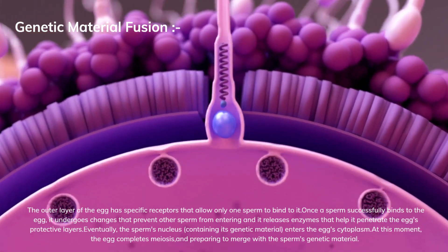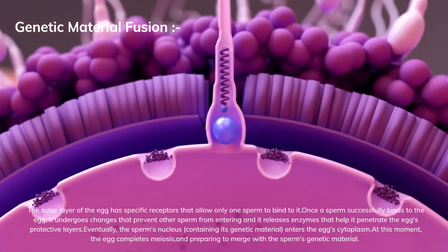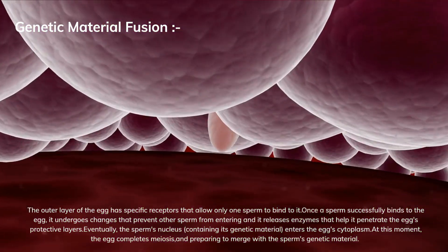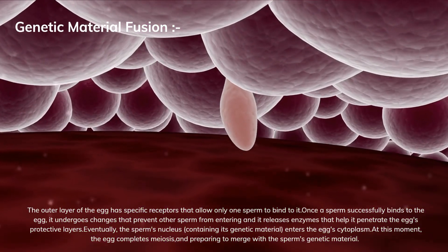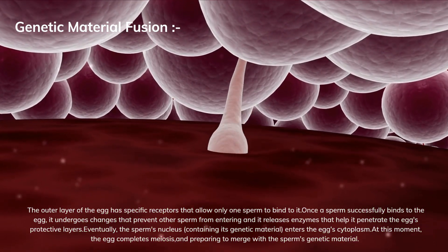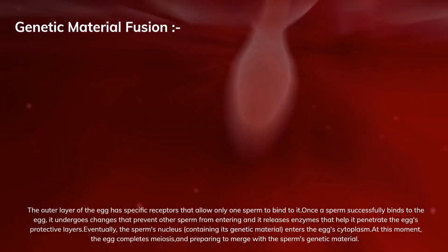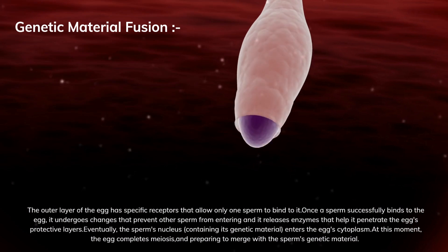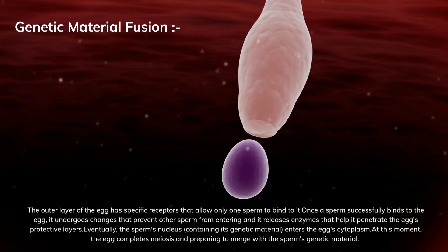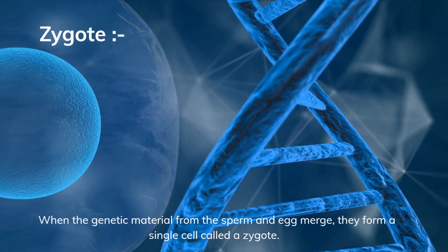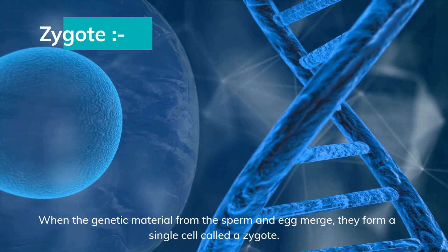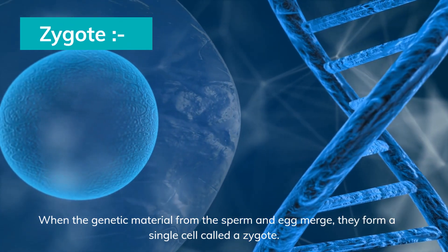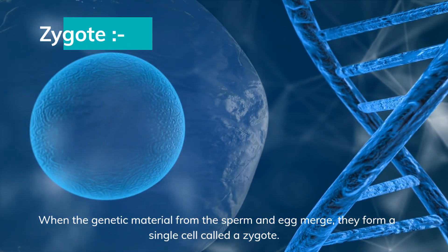Eventually, the sperm's nucleus, containing its genetic material, enters the egg's cytoplasm. At this moment, the egg completes meiosis, preparing to merge with the sperm's genetic material. When the genetic material from the sperm and egg merge, they form a single cell called a zygote.